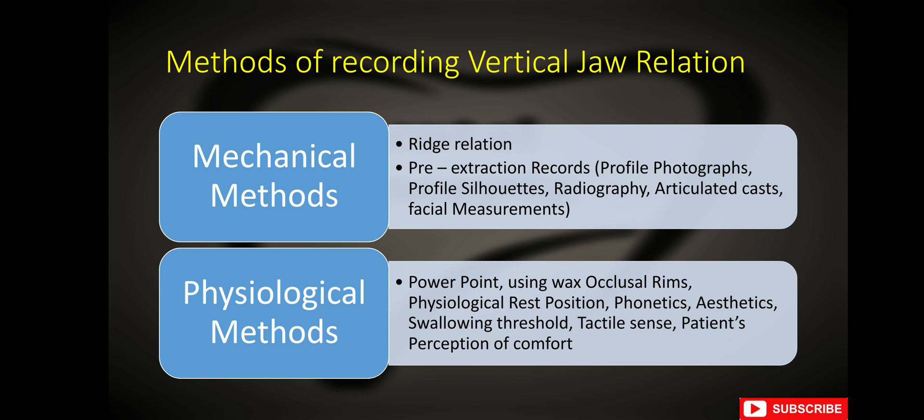What are the different methods of recording vertical jaw relation? We can record vertical jaw relation with mechanical methods and physiological methods. Mechanical methods include the ridge relation and use of pre-extraction records like profile photographs, radiographs, articulated cast, and facial measurements. Physiological methods include use of power point, wax occlusal rims, physiological rest position, phonetics, aesthetics, swallowing threshold, tactile sense, and patient's perception of comfort.